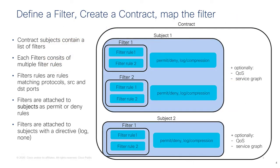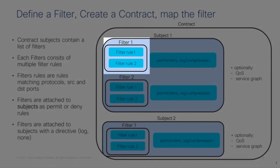There are more building blocks between filters and contracts. Beyond just permit and deny actions, you can perform other operations. The hierarchy is: you define a filter, and the filter is made of multiple rules. For example, a filter called 'web' or 'HTTP' could consist of a filter rule for port 80 and a filter rule for port 443.